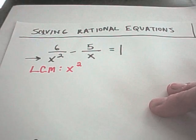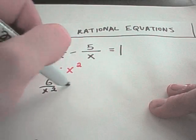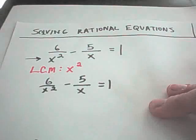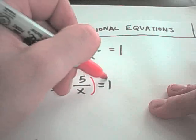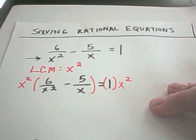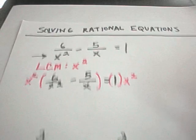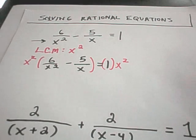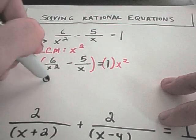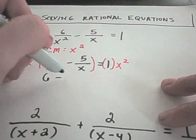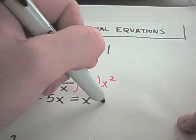So I'm going to multiply both sides of this equation by x squared. I have 6 over x squared minus 5 over x equals 1. When I distribute x squared, the x squareds will cancel out and I'll be left with 6. Then x squared over x will leave me minus 5x equal to x squared. And now this is just a quadratic equation.